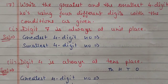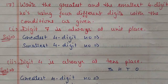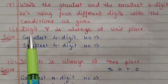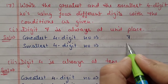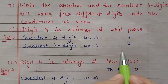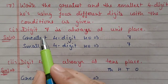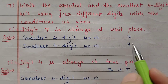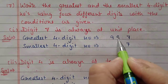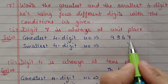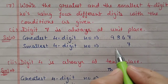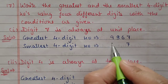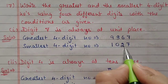Next question number 17: write the greatest and smallest 4-digit number using 4 different digits with given conditions. First condition: digit 7 is always at the units place, so units place is occupied. For the greatest number, fill remaining 3 places with greatest digits 9, 8, and 6, giving 9867. For the smallest number, use smallest digits 0, 1, 2 — but 0 cannot be at thousands place, so keep 1 there: giving 1027.